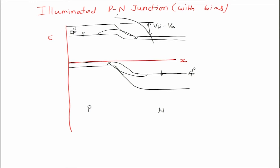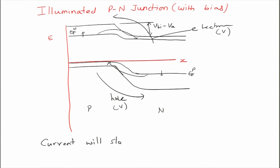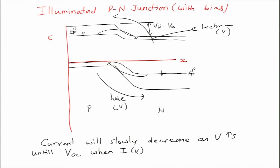This is countered by electron and hole migration driven by the applied voltage from the n side. As V increases, the current slowly decreases until V_OC, when I(V) takes over I_sc. When the bias-induced forward current — made up of diffusion current, space charge current, and so on — takes over the short circuit current that is generated primarily because of generation, the net current becomes zero.